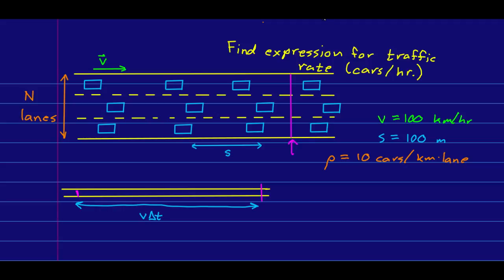And so, now we can say that the number of cars that are in this piece of the highway is just going to be the density times the size, which here is an area of that piece of highway. And so, that is going to be the car density times the length of that piece of highway times the number of lanes.